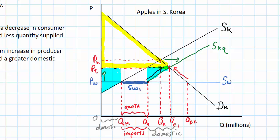That leaves a big white rectangle in the middle of our graph. Let's talk about the effect on foreign producers. Interestingly, the imposition of a quota has a less harmful effect on foreign producers than the imposition of a tariff might. The reason is that the price increase is actually passed on to foreign producers. In green, I'll outline the area of foreign producer revenue before the imposition of the quota — the quantity of imports before the quota times the world price PW.